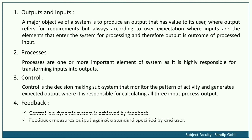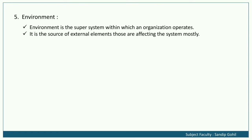Feedback: Control in a dynamic system is achieved by feedback. Feedback means comparing your output against a standard specified by the end user. For example, when you take any service, you are asked to provide feedback so the system can know whether it is working correctly. Feedback can be in the form of complaints, suggestions, or remarks. Environment: Environment is the super system within which an organization operates. It is the source of external elements that affect the system.